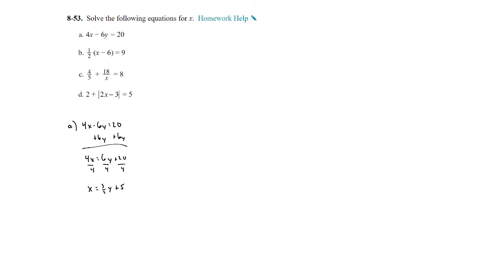For b, we do have just one variable, so we will be able to solve. We could distribute the 1 half, we could also multiply by 2 to cancel out the fraction. I'll go ahead and distribute the 1 half, and then add 3 to both sides, and then times it by 2, so x is equal to 24.